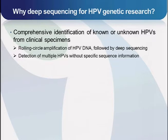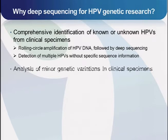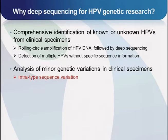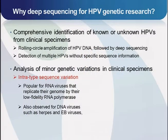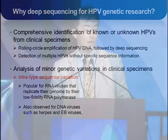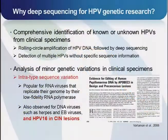You can detect multiple HPV types at the same time without specific sequence information. Another application is analysis of minor genetic variation in clinical specimens. This is called introtype sequence variation and is very popular for RNA viruses that replicate their genomes by low-fidelity RNA polymerases. Interestingly, it is also observed for DNA viruses such as herpes and EB virus. Furthermore, in a Science paper, introtype variations were reported for HPV-16 in CIN1 samples, but it's not clear how these introtype variations contribute to HPV carcinogenesis.